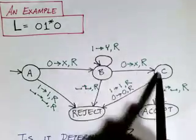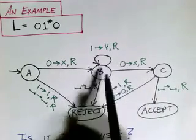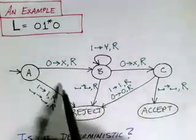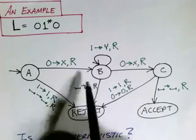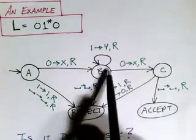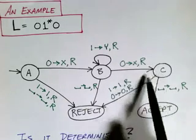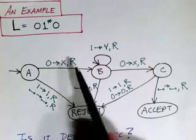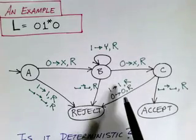We can see zero or more ones and we just take this transition over and over. Also when we see our zero we replace it with an X and for each one we replace that with a Y and we move right so we are moving right through the input. And when we see our final zero we replace that with an X and move right into state C. In all other cases we go to the reject state. So we can see this thing is deterministic.